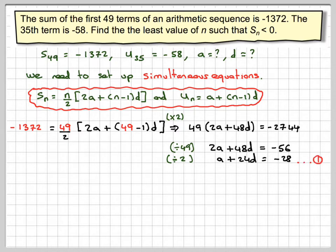Now using that the 35th term is equal to minus 58, so using this formula, minus 58 is equal to A plus 35 minus 1 times D. So that comes down to A plus 34D is equal to minus 58. We'll call that equation 2.